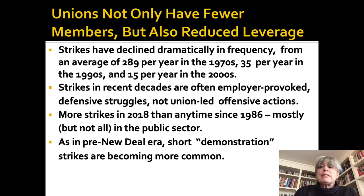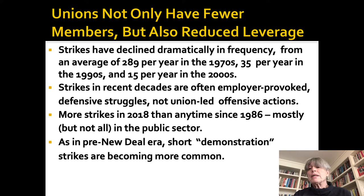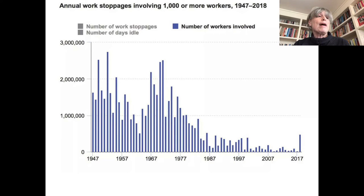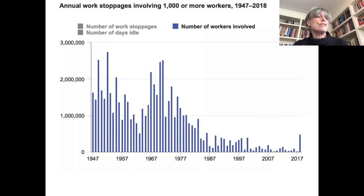Another thing reminiscent of the period before 1935 is the rebirth of short, often one day or even shorter, so-called demonstration strikes. Those are becoming more common since long-term strikes are very risky for workers nowadays. Here you see a graph that shows the dramatic decline I described, and you can also see the spikes in strike activity immediately after World War II and in the 1960s, but if you look at the right-hand part of the graph, you can see the sharp decline in strike activity.